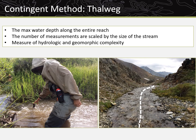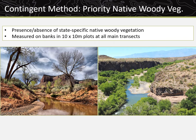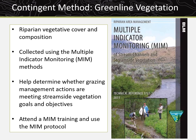Thalweg depth profile measures the max water depth along the entire reach. The number of measurements are scaled by the size of the stream and it can be used as a measure of hydrologic and geomorphic complexity. Pool tail fines represent the percentage of pool tail streambed particles covered by fine sediment; fine sediment less than 2 mm and less than 6 mm are assessed separately at the first 10 qualifying pools using a square grid. The frequency of occurrence of priority native woody vegetation is documented within a 10 by 10 meter plot centered on each main transect. If species-level riparian vegetation cover and composition data are needed, the MIM or multiple indicator monitoring methods for green line composition are used, requiring a field botanist as a third crew member.